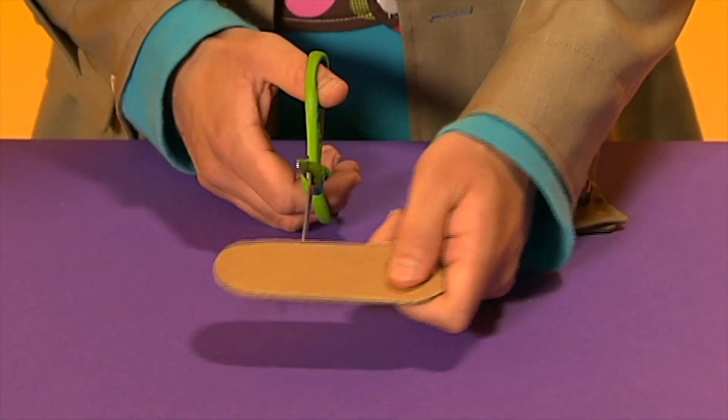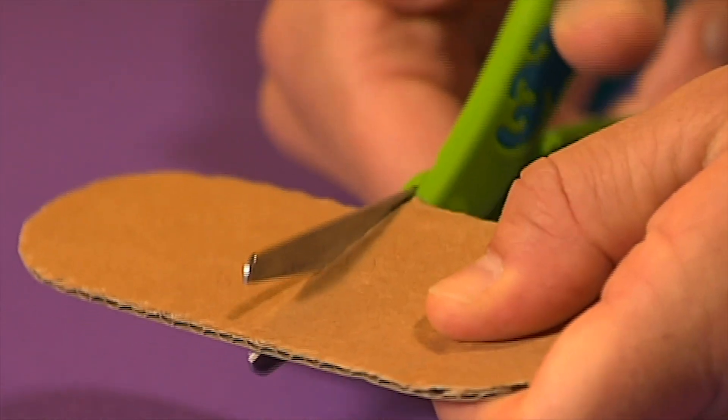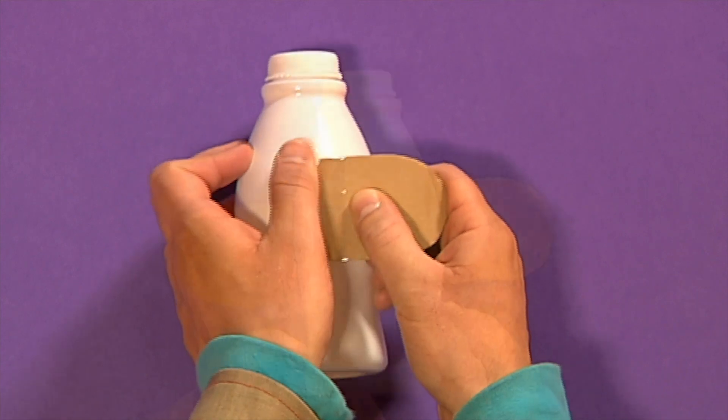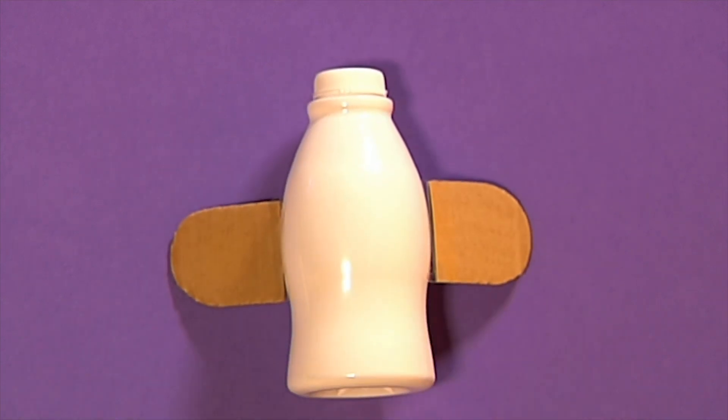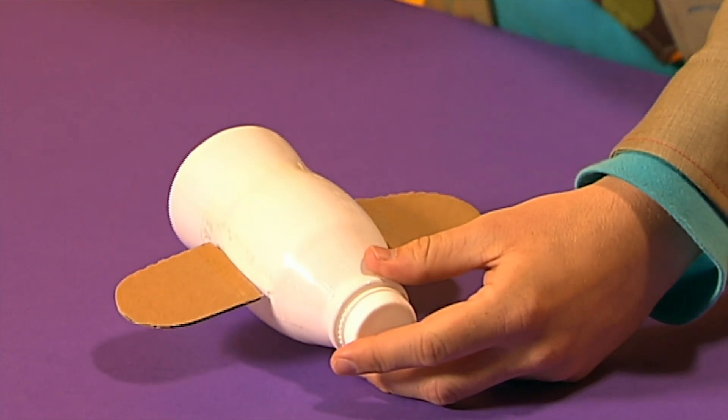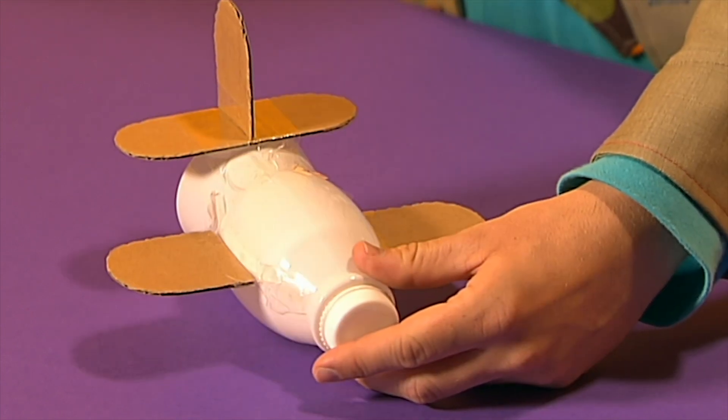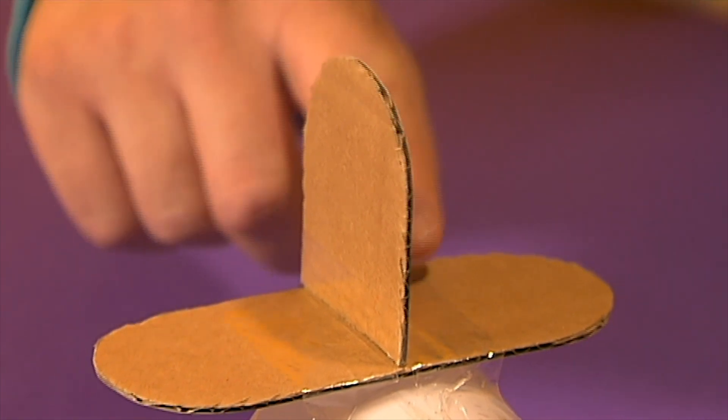Now cut one of the cardboard sausages in half and tape both of the pieces onto the bottle like this. Then tape the other big cardboard sausage to the bottom of the bottle and stick half a cardboard sausage on top.